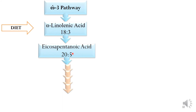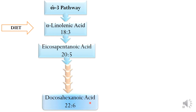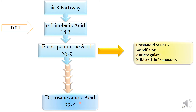Eicosapentaenoic acid undergoes various biochemical reactions to form docosahexaenoic acid. Docosahexaenoic acid is a 22:6 omega-3 fatty acid, so it has 22 carbon chains and 6 double bonds. Eicosapentaenoic acid through biochemical reactions also gives rise to prostanoids of series 3. These prostanoids are vasodilators, anticoagulant, and mild anti-inflammatory molecules, so they are cardioprotective in nature.